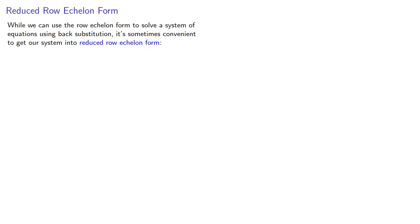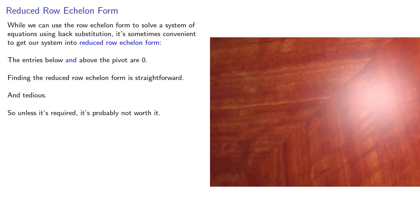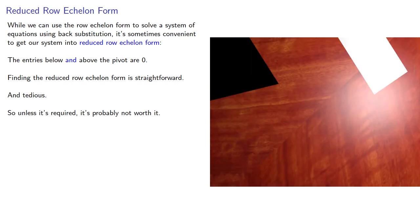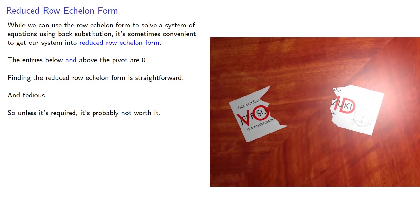While we can use the row echelon form to solve a system of equations using back substitution, it's sometimes convenient to get our system into reduced row echelon form. The entries below and above the pivot are zero. Finding the reduced row echelon form is straightforward and tedious, so unless it's required it's probably not worth it. However, if I don't at least mention reduced row echelon form, I may get my mathematician card revoked.